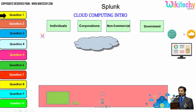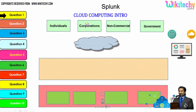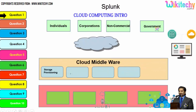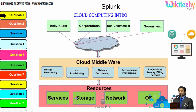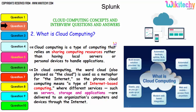There are different types of users: individuals, corporations, non-commercial people, and government. Any of these users can access services, storage, networks, or operating systems via cloud middleware — specialized software provided by the cloud service provider to access resources. This is how the cloud computing architecture works.